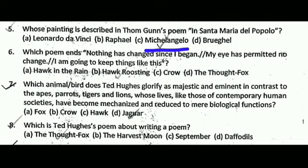Question number six: which poem ends, 'Nothing has changed since I began. My eye has permitted no change. I am going to keep things like this'? The correct answer is B, that is Hawk Roosting.